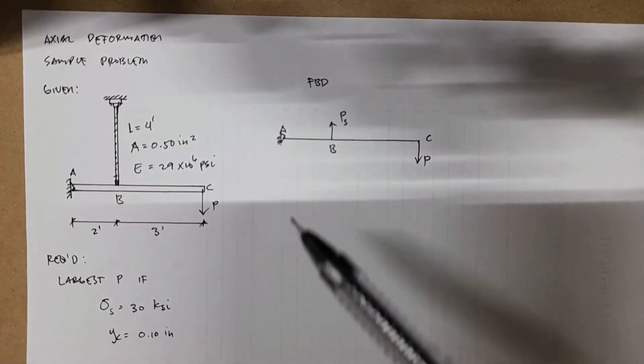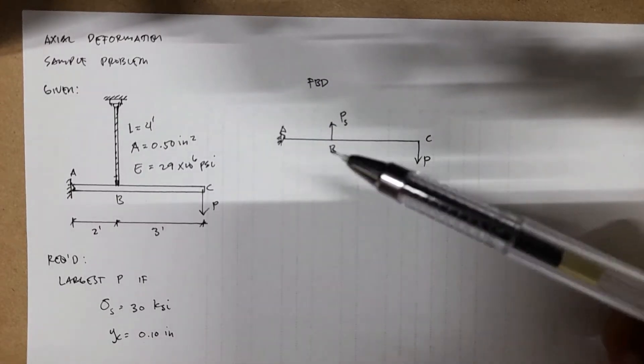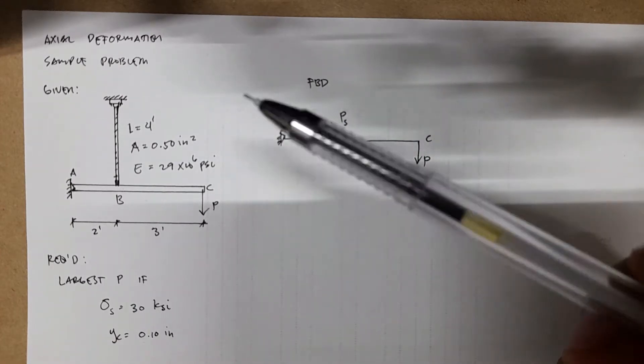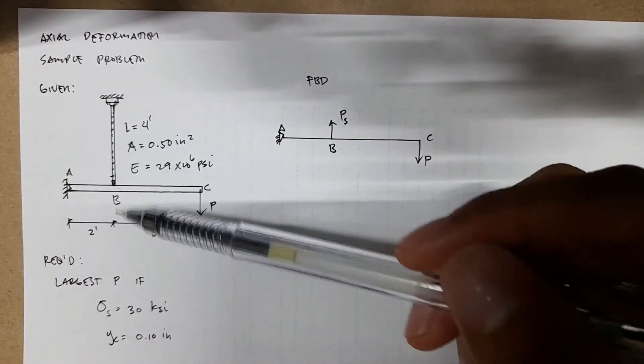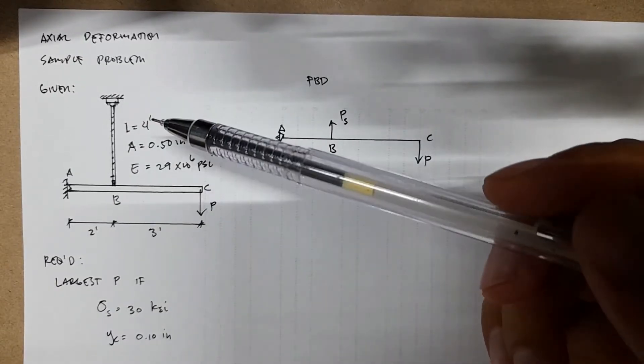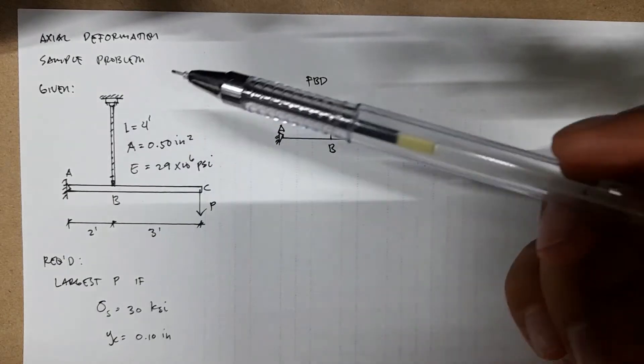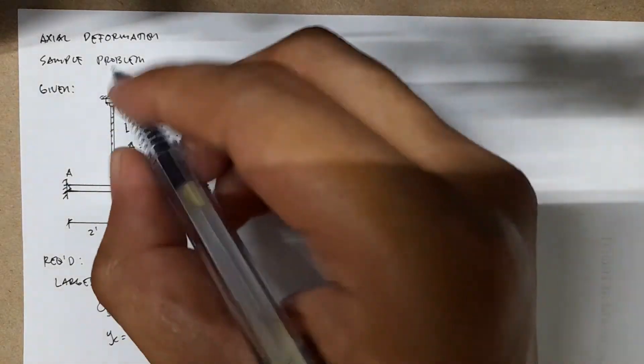We are viewing an example of axial deformation. Axial deformation is caused by axial forces loaded in the longitudinal axis of a member. In this case, it's a steel member.